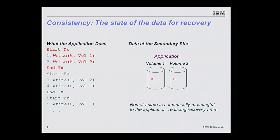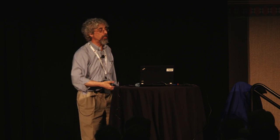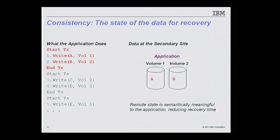The final type is application consistency, where the state of data at the secondary site is semantically meaningful to the application — for instance, containing only complete transactions. To get application consistency you need a hook into the application. Microsoft has VSS; various applications have hooks where the replication code can inform the application it wants a consistent view and enforce that data is replicated at a consistent point in time. With application consistency you cannot achieve an RPO of zero, because not all points in time are application-consistent.